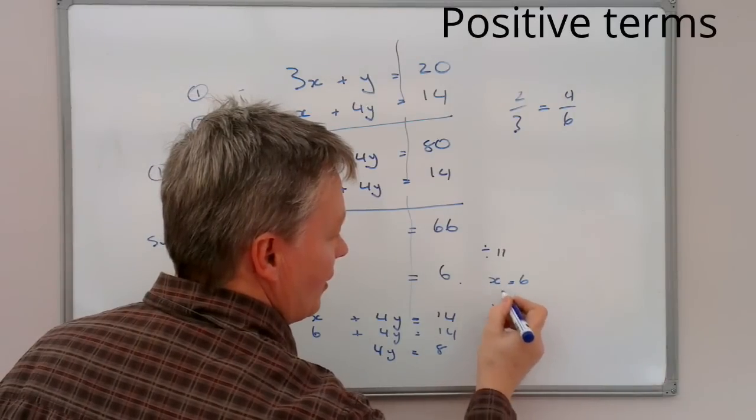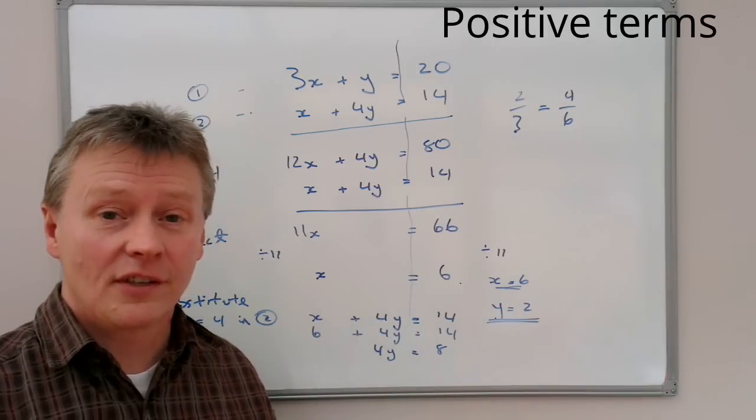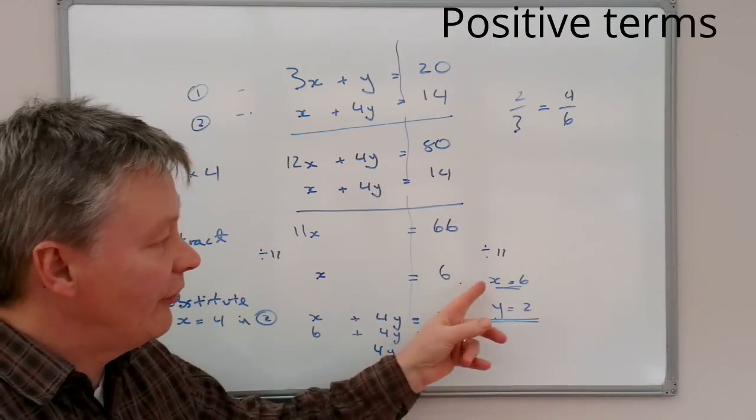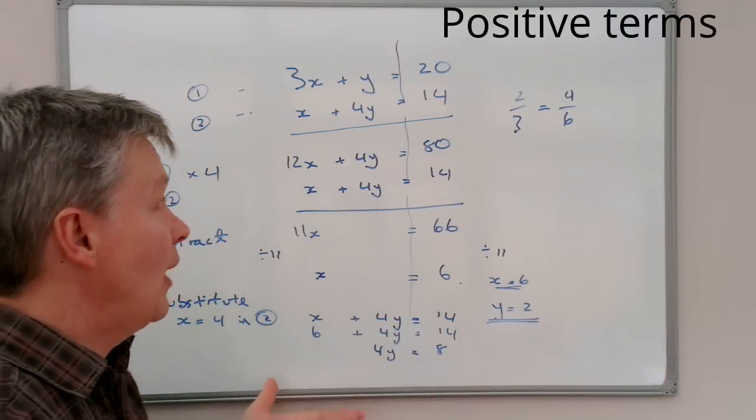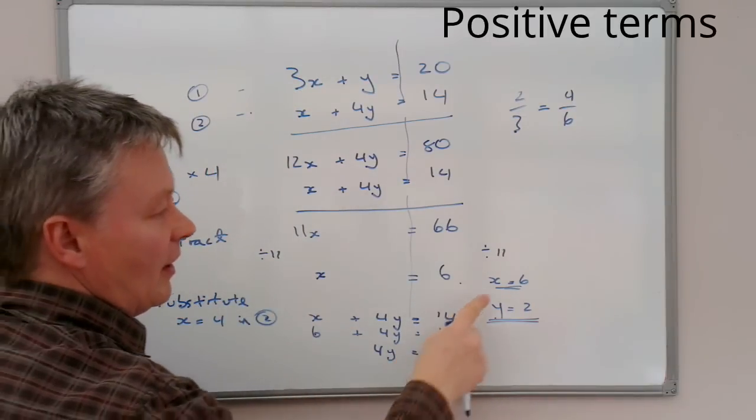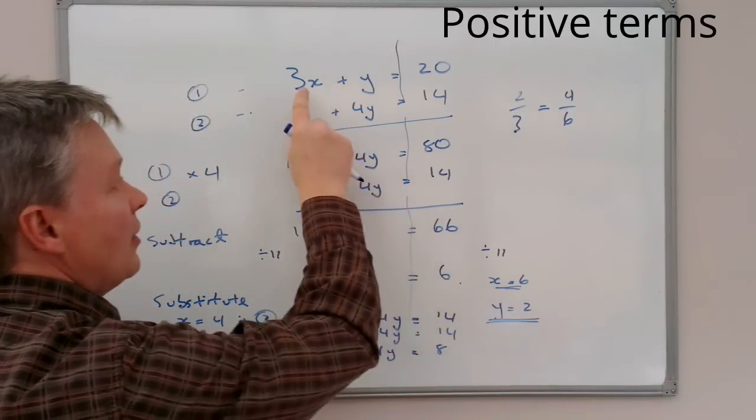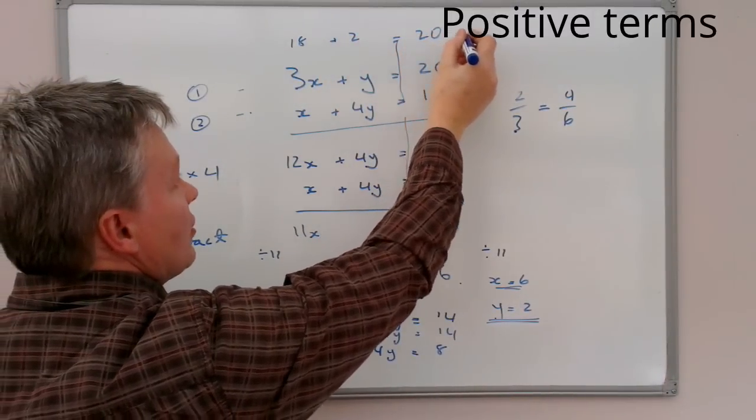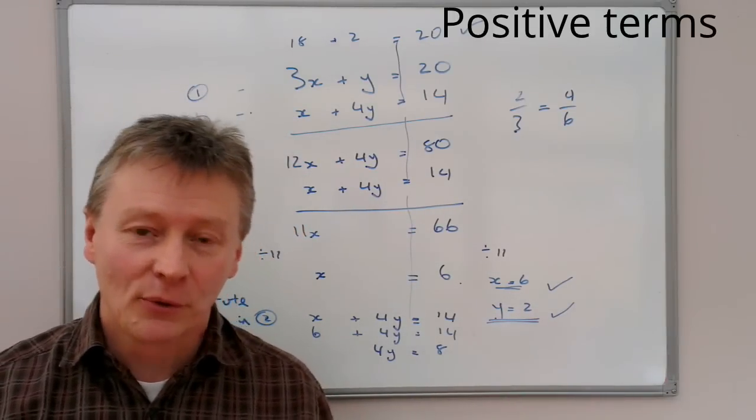So, I now have two values, x equals 6 and y equals 2, which is the solution to these two simultaneous equations. Now, if I want to prove it, I can feed these numbers back into, again, any one of the equations I've got, and they should balance. So, just very quickly, if you can have a look at the top one here, if x is 6, then 3x will be 18. Y is 2, so I've got 18 plus 2 equals 20. Therefore, I know I must be right with x equals 6 and y equals 2.